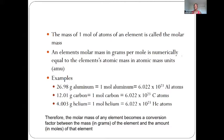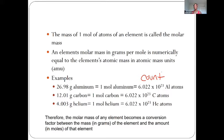For instance, one mole of aluminum means we would have 6.022 times 10 to the 23 atoms, and if I weighed it, it would equal 26.98 grams of aluminum. Similarly, one mole of carbon would be 6.022 times 10 to the 23 carbon atoms, but the mass would be 12.01 grams based on the atomic mass from the periodic table. For helium, one mole equals Avogadro's number, but the mass would equal only 4.003 grams. Therefore the molar mass of any element becomes a conversion factor we can use to go from grams to moles or moles to atoms.